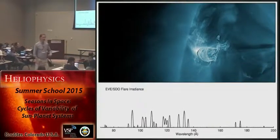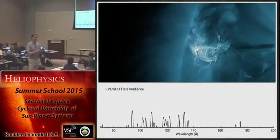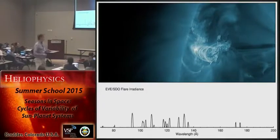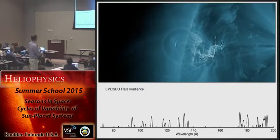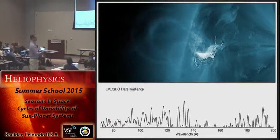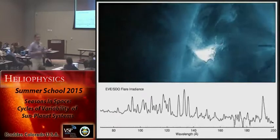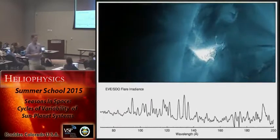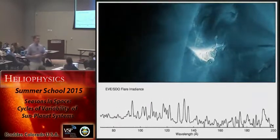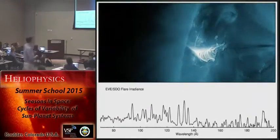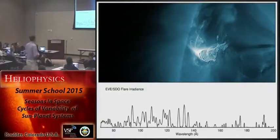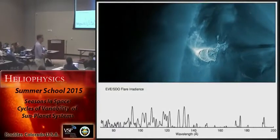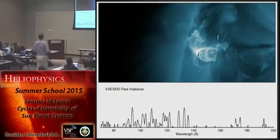EVE provides spectrally resolved observations beginning around 60 angstroms and continuing all the way up to about 1,050 angstroms, with a spectral resolution of about one angstrom. It is full-disk with no spatial resolution.